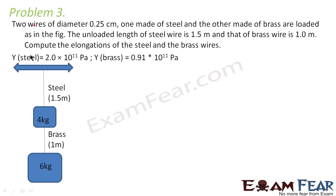Now let us look at the third problem. Two wires of diameter 0.25 centimeter — one made of steel loaded with 4 kg and the other made of brass loaded with 6 kg — are set up as shown. The unloaded length of the steel wire is 1.5 meters and the brass wire is 1 meter. We need to compute the elongations of both the steel and the brass wires.